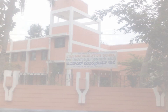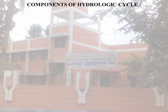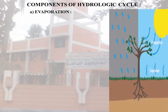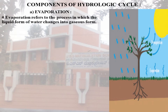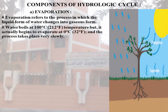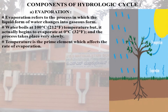In evapotranspiration, there are two types. The first is evaporation. Evaporation refers to the process in which the liquid form of water changes into gaseous form. Water boils at 100 degrees Celsius, which is 212 degrees Fahrenheit, but it actually begins to evaporate at 0 degrees Celsius, or 32 degrees Fahrenheit. The process takes place very slowly. Temperature is the prime element which affects the rate of evaporation.